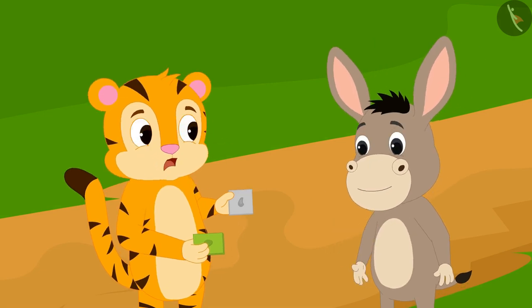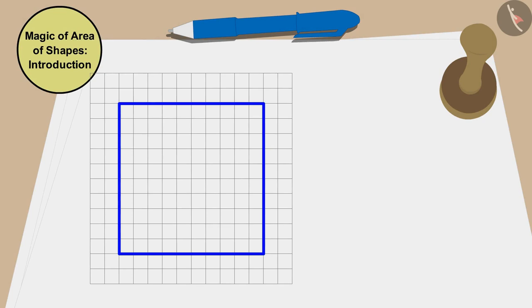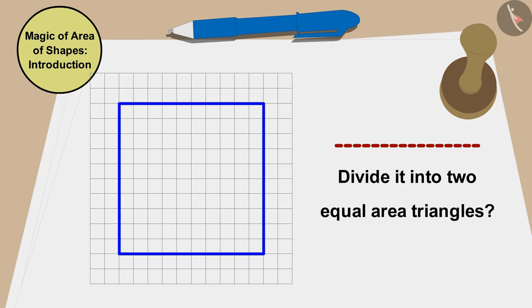Sher Khan was shocked. Children, can you divide the shape of this cashew barfi by just drawing a straight line and somehow divide it into two equal area triangles? You can find a solution by stopping the video.